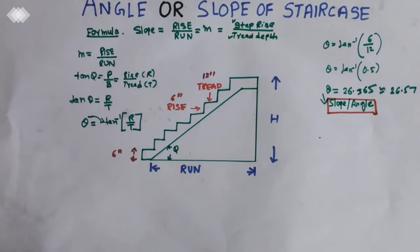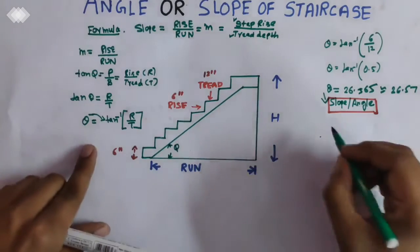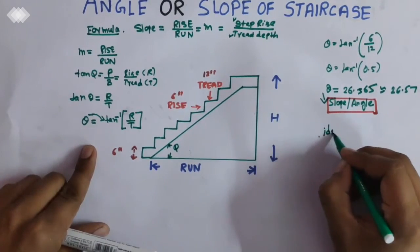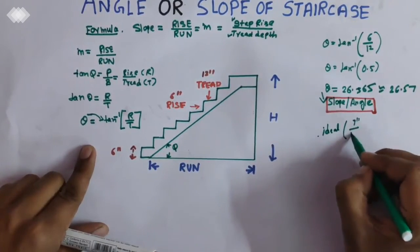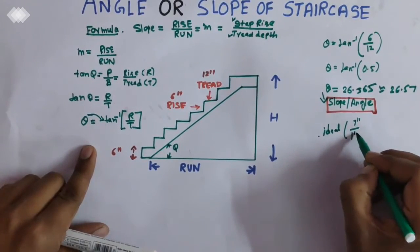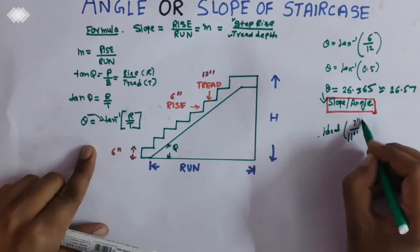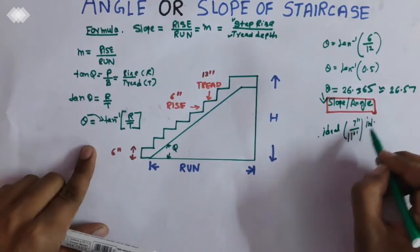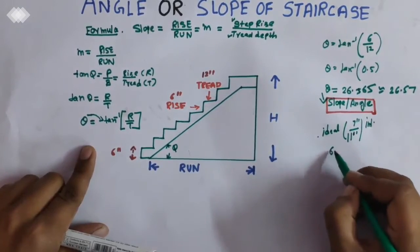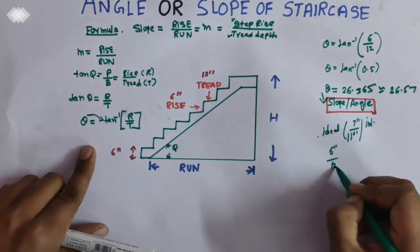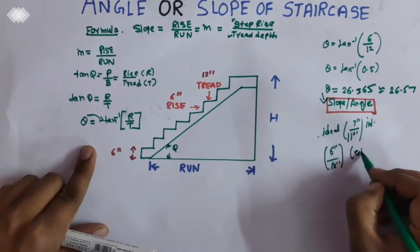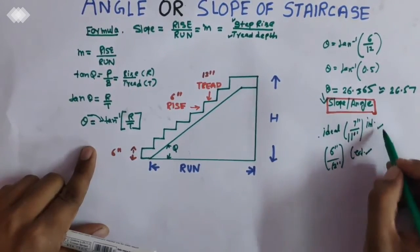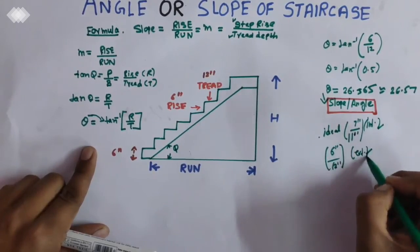Now what is the ideal? For interior stair 7 inches by 11 inches. This is for the interior. And for exterior we follow, this is not the standard, for the exterior staircase this value we follow.